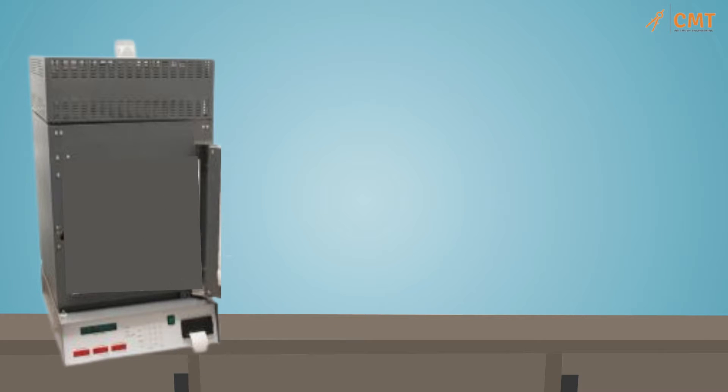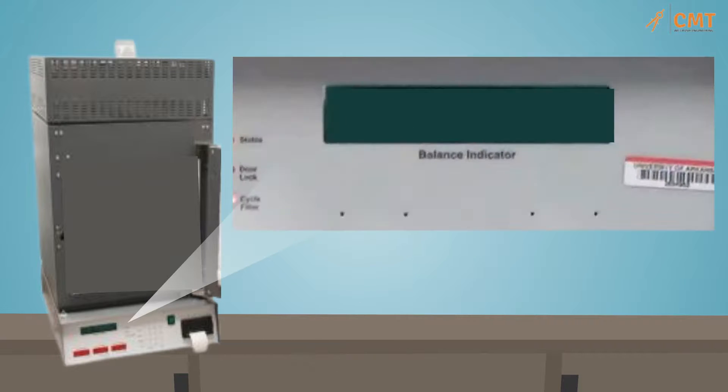Close and latch the door. Verify that the total mass of the basket assembly and sample shown on the oven display is within 5 grams of the total mass recorded from the external scale. If not, reposition the basket assembly to eliminate rubbing or check the scale calibration.